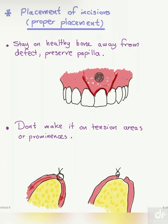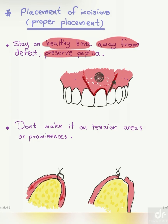Regarding proper placement of the incision, always remember to stay on healthy bone. Do not incise on the defect — get away from the defect at least six millimeters circumferentially. Always remember to preserve the papilla. You have to include the papilla fully in the incision — do not incise in the middle of the papilla, as this is a mistake. We have to preserve the papilla aesthetically and for proper function, especially in periodontal surgery.